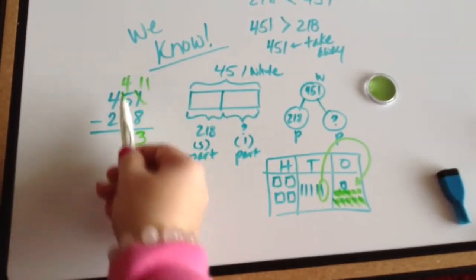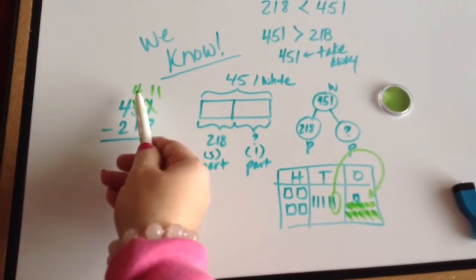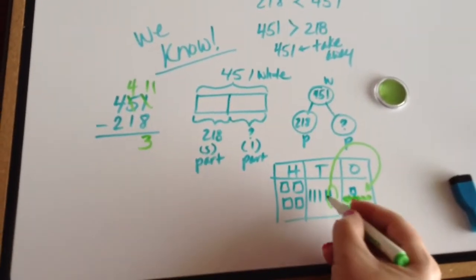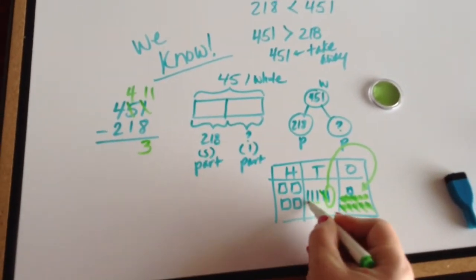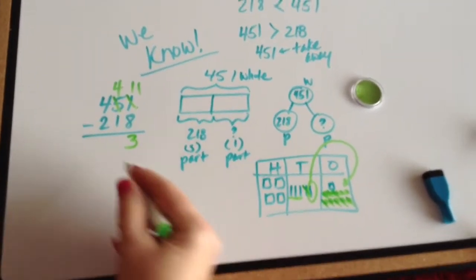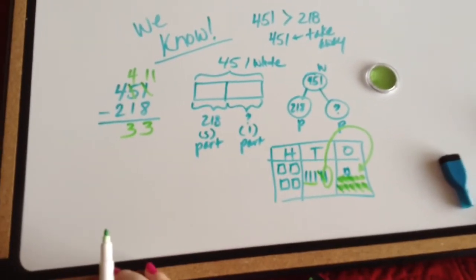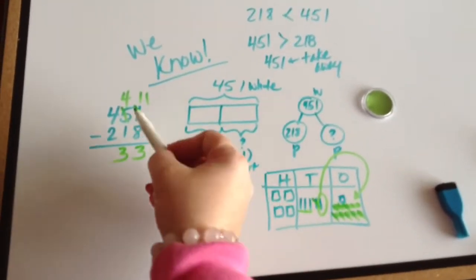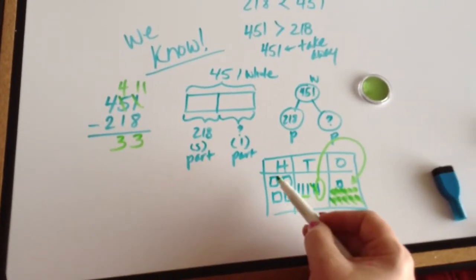We still have these 4 tens. We go to the tens place, second step. We have these 4 tens, take away 1 ten, we're left with these 3 tens.